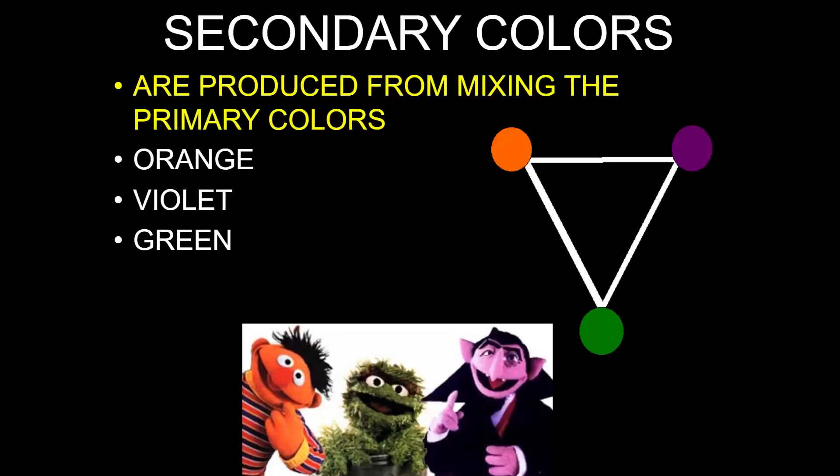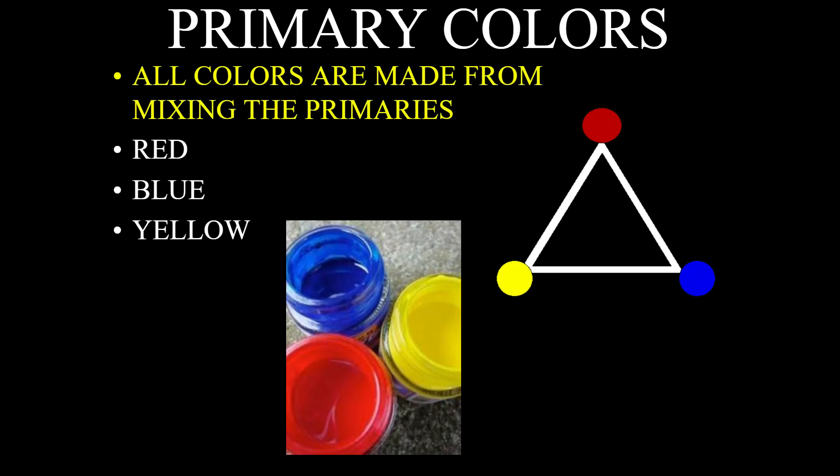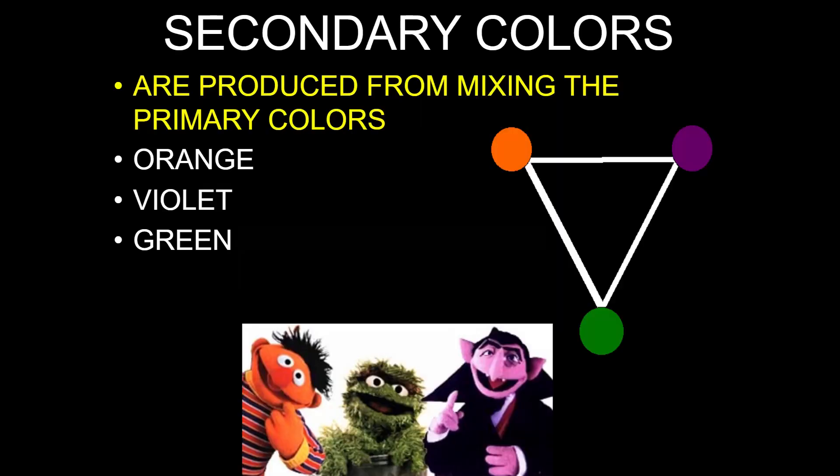Secondary colors are produced from mixing the primary colors. But you might be like, Mr. Holmes, you just said all colors are made from primary colors, so what makes secondary colors special? Well, they're mixed literally with only the primary colors. Look at orange, violet, and green. We had red, blue, and yellow, right? You're going to mix red and yellow together, you're going to get orange, and so on and so forth. That's what we mean by secondary colors. They're very primal in nature, but they're not primary.